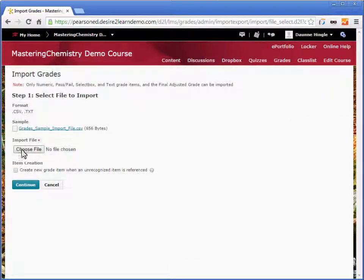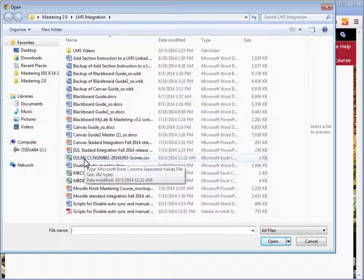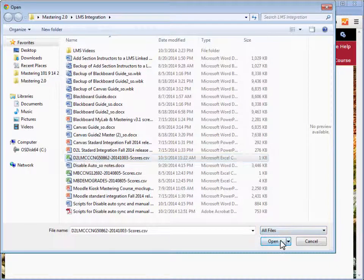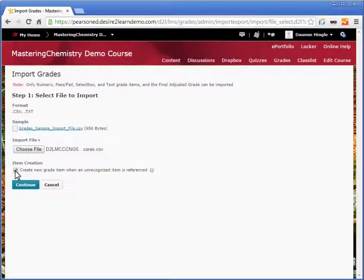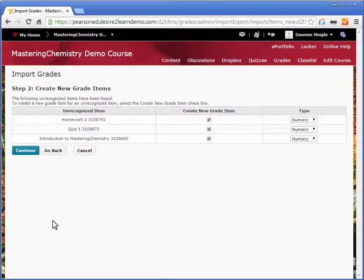Click choose file. Select the file you exported of the scores. Make sure you check the checkbox and click continue. Make sure each unrecognized item has a check and then click continue.